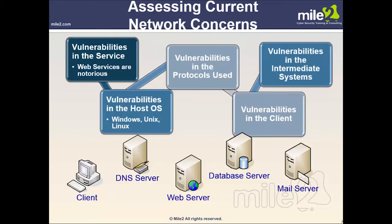Assessing current network concerns: we need to look at different types of vulnerabilities, specifically vulnerabilities in services. Web services are notorious, but a service can be anything — SMTP, HTTP for web servers, NTP for network time protocol, Telnet, and others. Different port numbers tell us what services are running, and depending on those services, they can have different vulnerabilities.